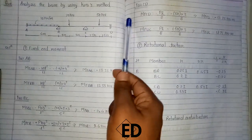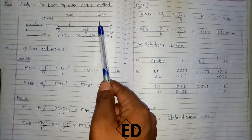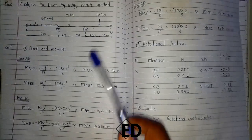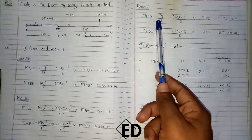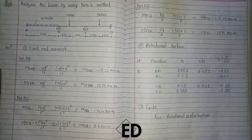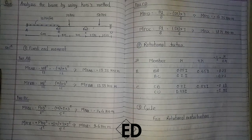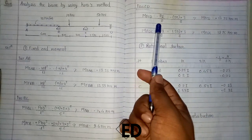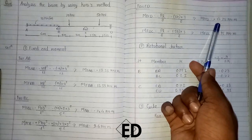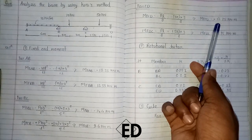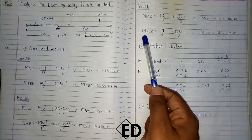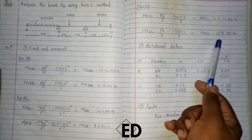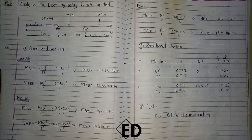For span CD, the point load acts at the center and we directly calculate using PL/8. The fixed end moment for a point load acting at the center gives us fixed end moment from C to D as minus 18.75 kNm and fixed end moment from D to C as 18.75 kNm.